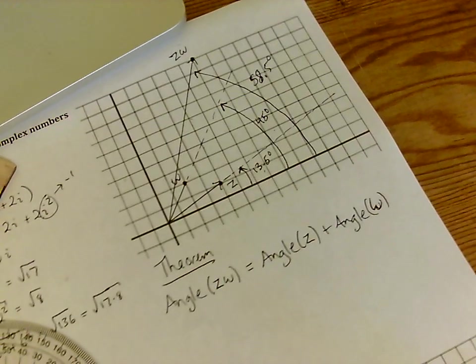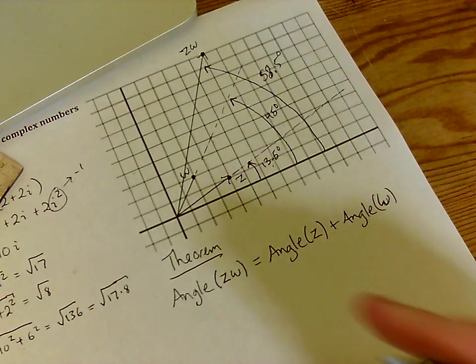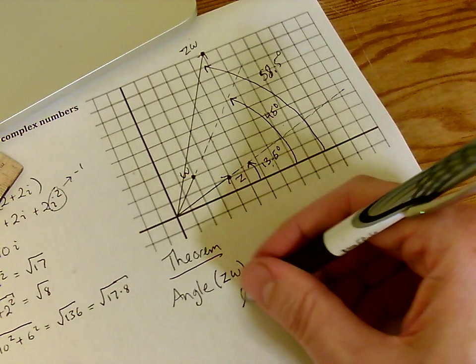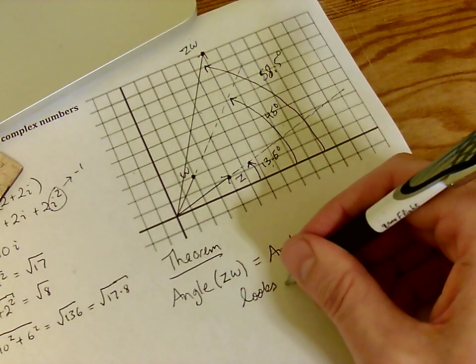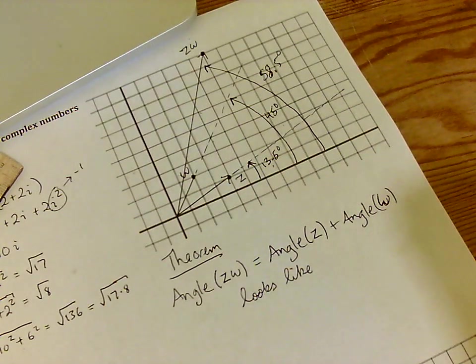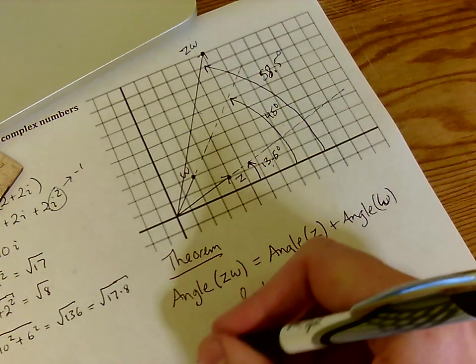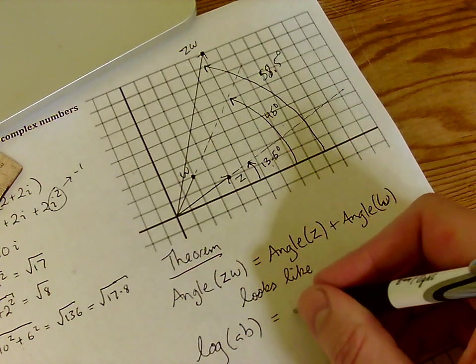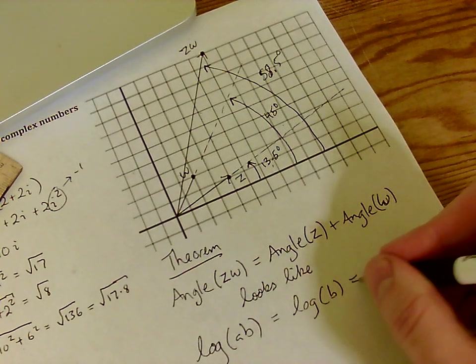Now, why is this so cool and amazing? Well, this formula should look familiar to you. If you've had advanced functions, you will realize that this formula looks like something you've seen before. This looks like logarithm of AB equals the sum of the logarithms of the individual factors.